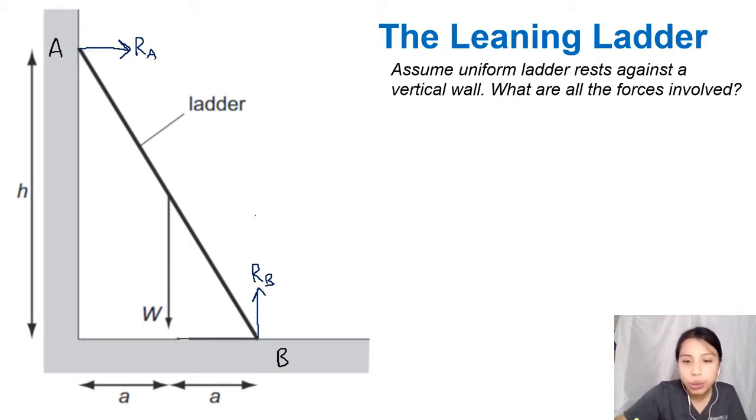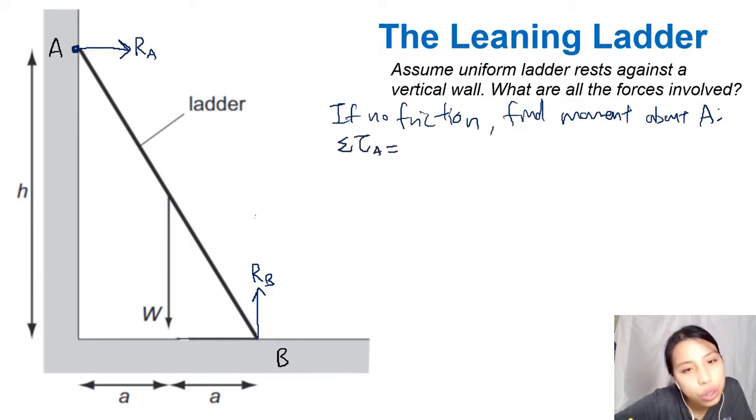So normal reaction force is always perpendicular to the surface. So you have a normal reaction force here, RA. Also at B. As long as you're touching the floor, you have a normal reaction force from the floor on the ladder. So if there's no friction, this is it. This is all the forces. No friction, nothing. So if you want to find an equation for moments about a certain point, you can do that. I'm going to say, in the case of no friction, let's find the moment about point A. So I take a pivot at A.